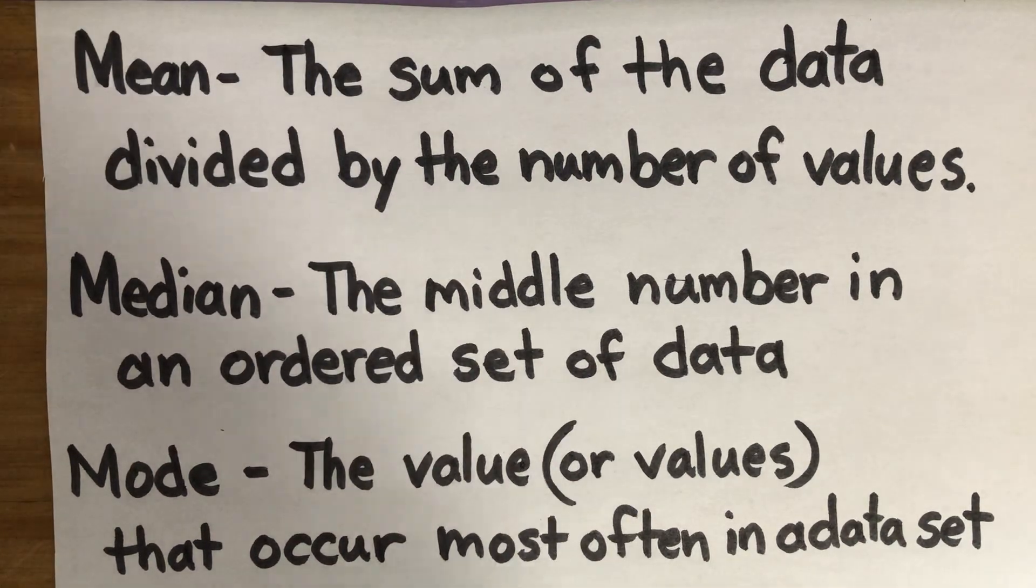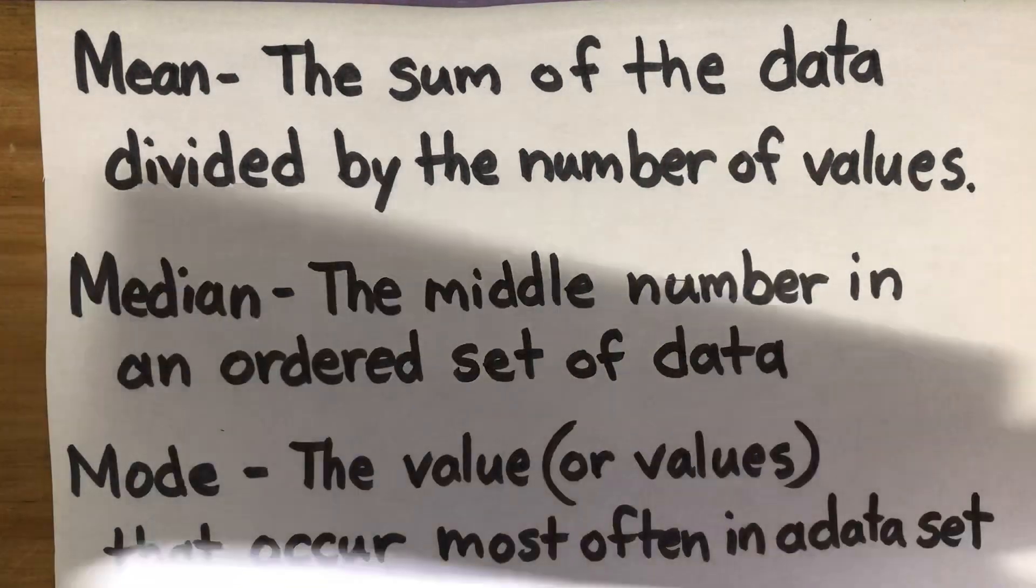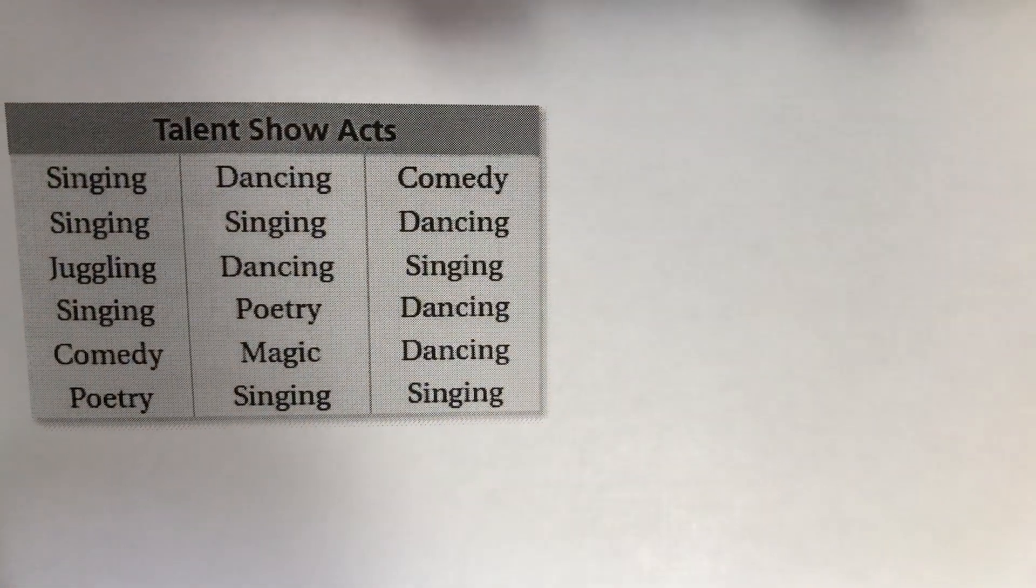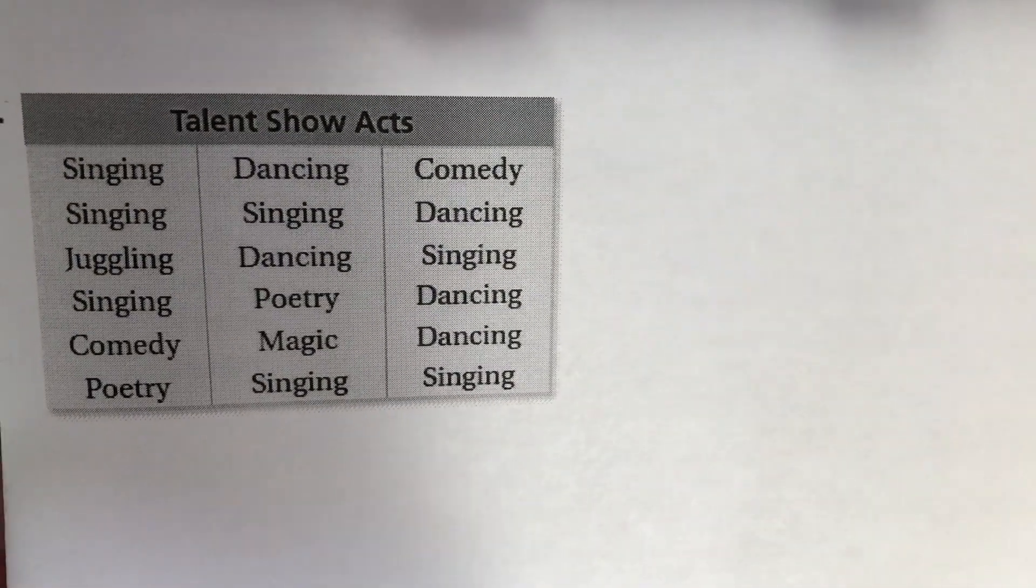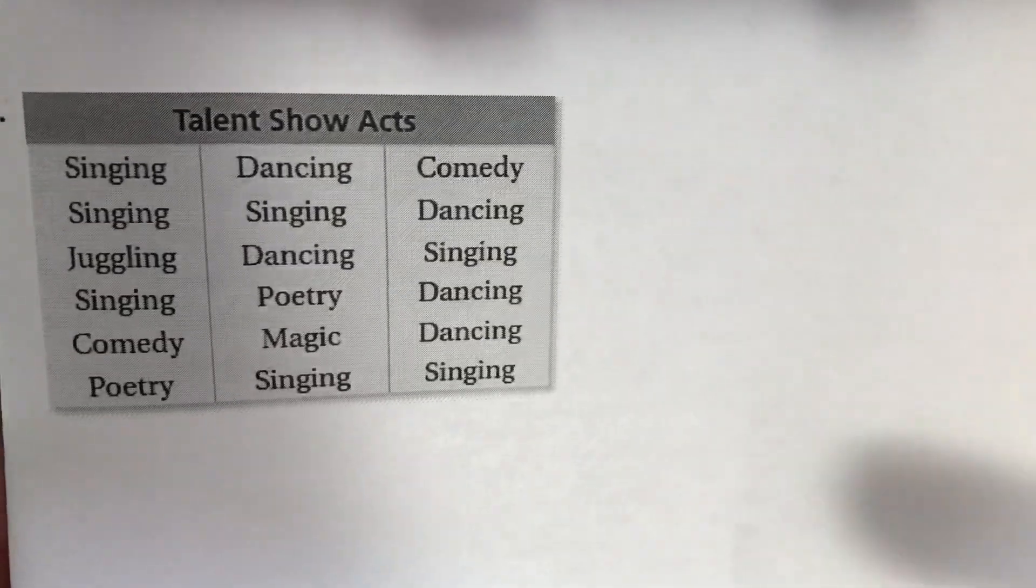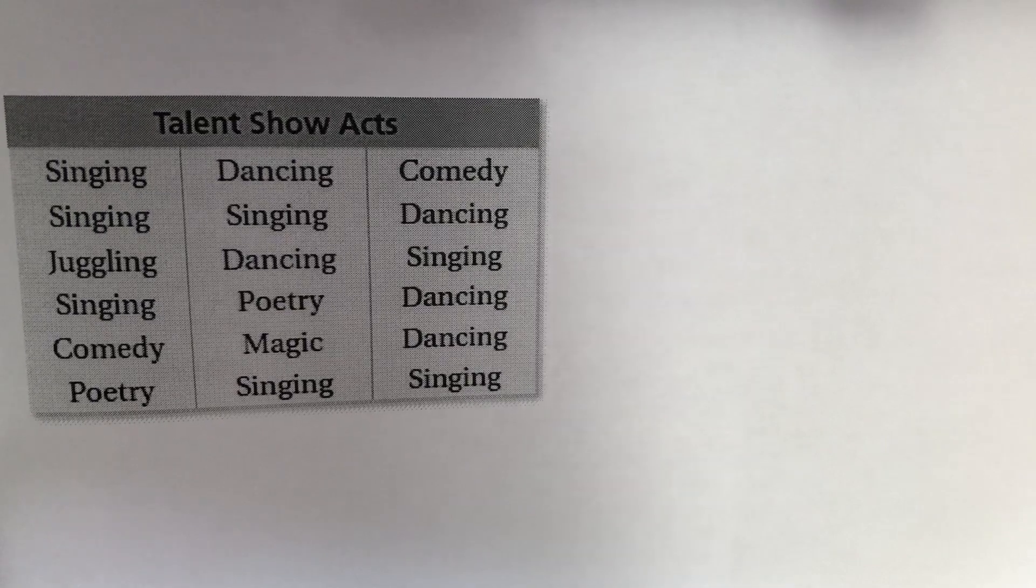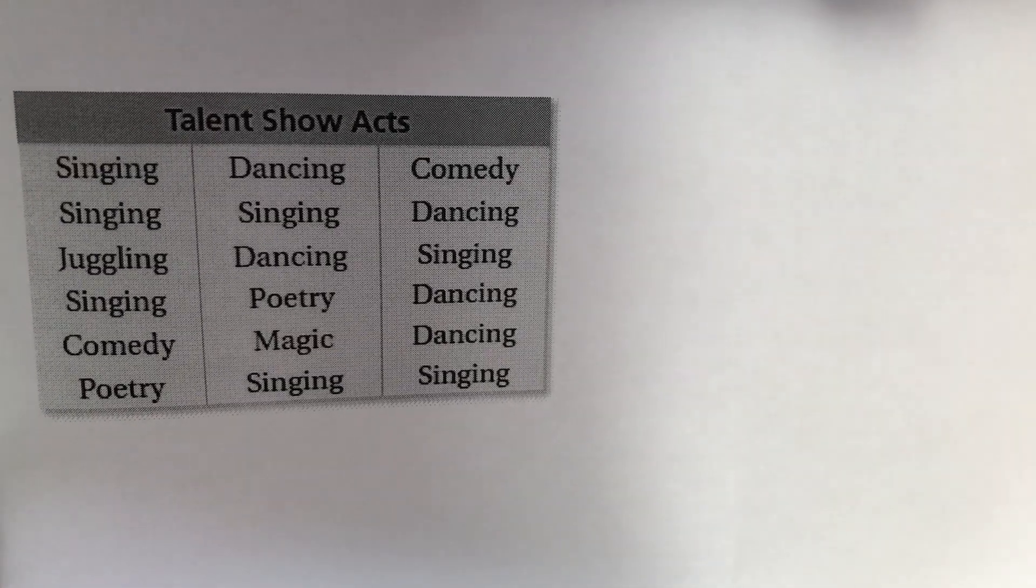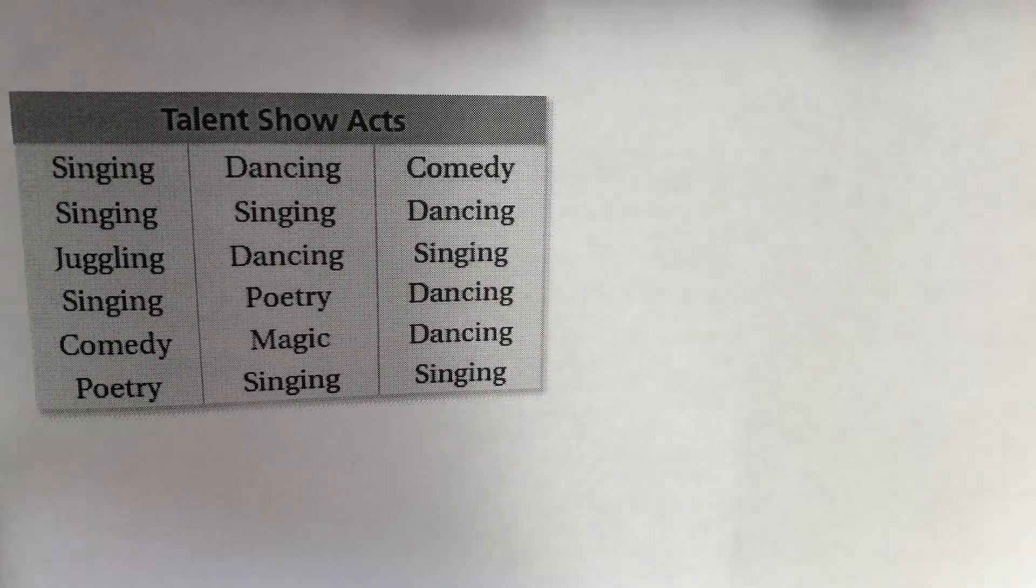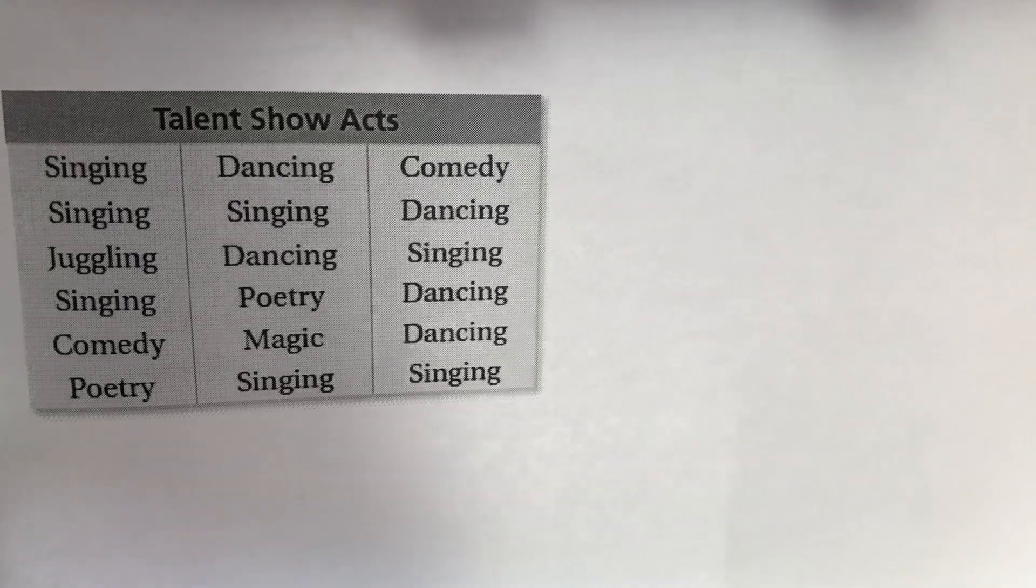So when I look at this data, which is organizing the show acts for a talent show, you can see there are some singers, some dancers, poetry, comedy. I can't use the median or the mean. There's certainly no outlier to worry about, even though there's only one person doing the poetry. But what we can look at is that the item that occurs the most would represent our mode.